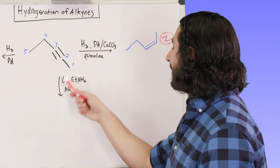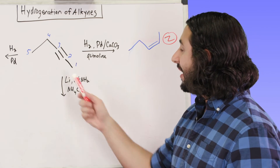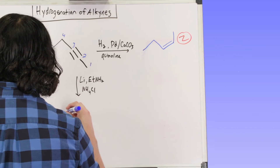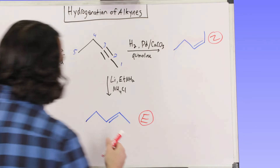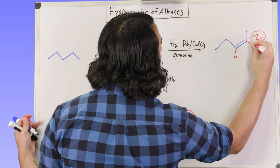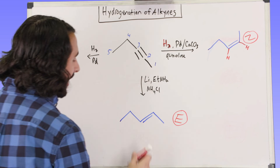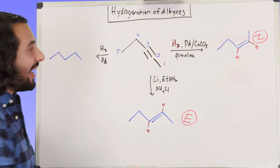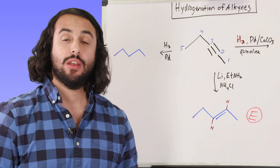Our last set of conditions — lithium/ethylamine/ammonium chloride, or sodium and ammonia — we're looking for that alkali metal doing the chemistry. We get the five-carbon alkene again, but this time the E alkene, where the alkyl groups project in opposite directions. The hydrogens added to opposite sides. So we've got the alkane from H₂/Pd, the Z alkene from Lindlar's catalyst, and the E alkene from the alkali metal conditions. Hopefully that helps us understand these three different sets of conditions for hydrogenation of alkynes.